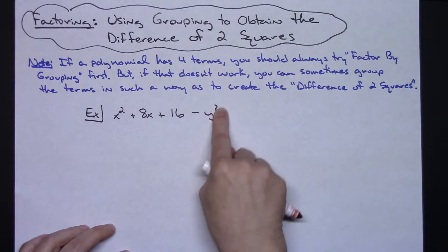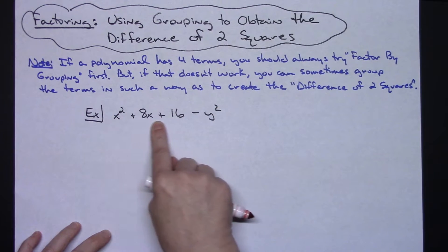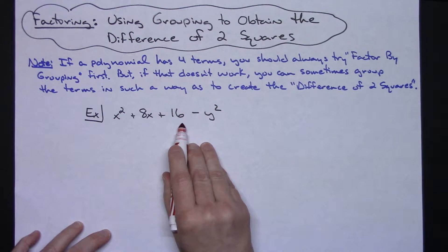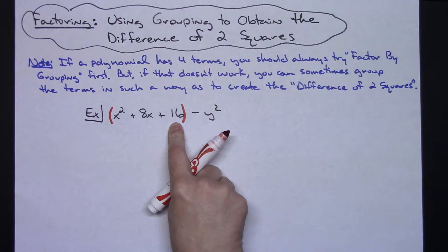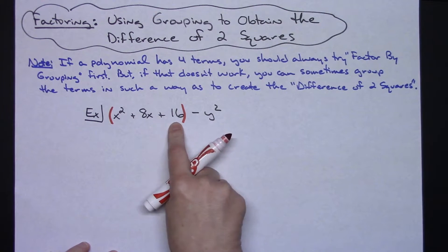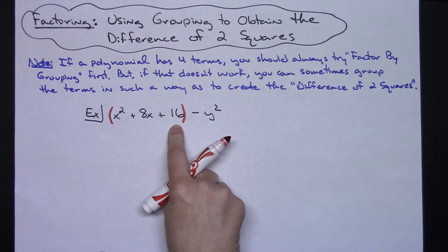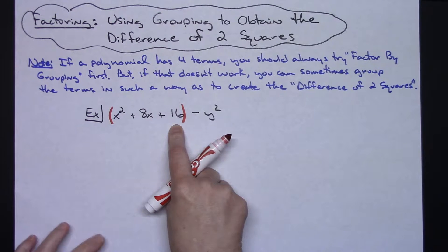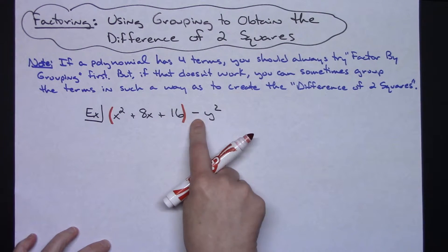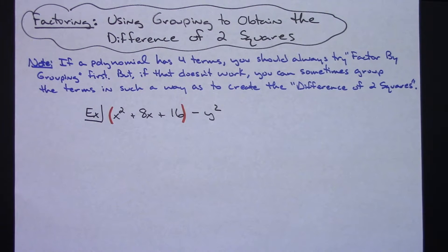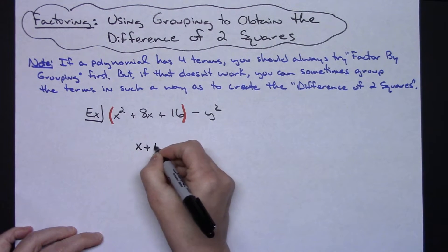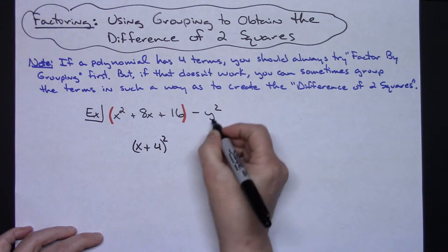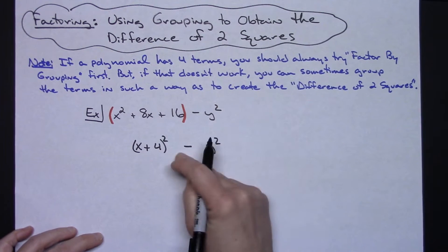I have a minus right here and a y squared that's a perfect square. If I take a look at these entire three terms right here, this turns out to be a perfect square trinomial. So I can factor this into x plus 4 and x plus 4. If I choose to write it as a quantity squared, that's going to give me two perfect squares with a minus sign in between. So factoring this perfect square trinomial, it will factor into an x plus 4 quantity squared, and then the minus y squared on this end.